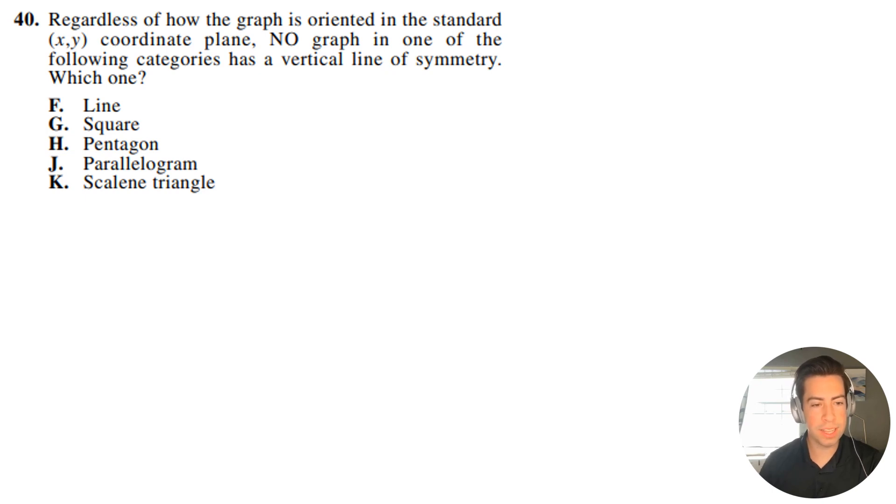Regardless of how the graph is oriented in the standard xy-coordinate plane, no graph in one of the following categories has a vertical line of symmetry. Which one? So what they mean by that is, no matter how it's oriented, that's basically saying, for example...